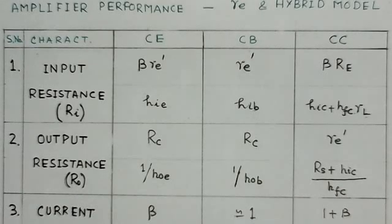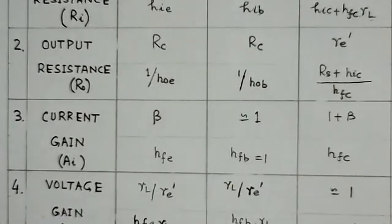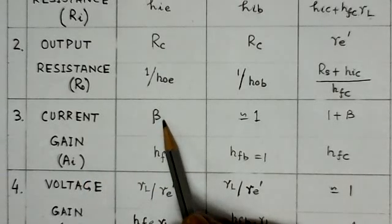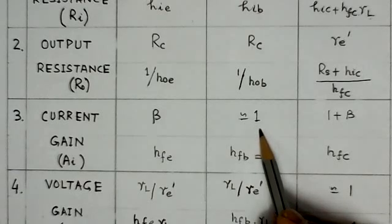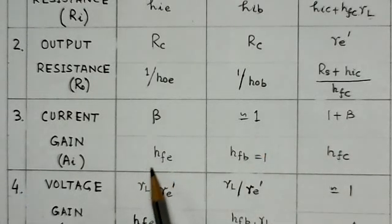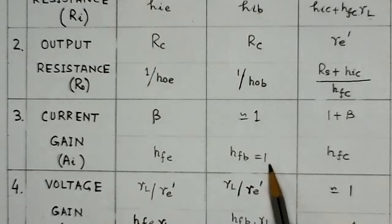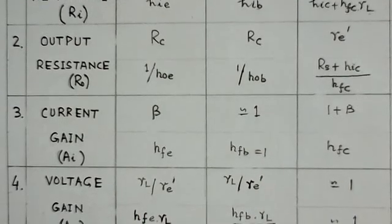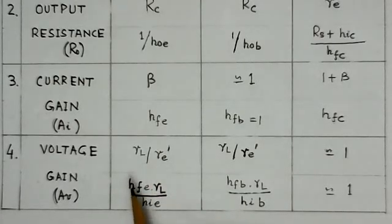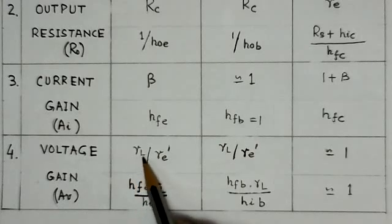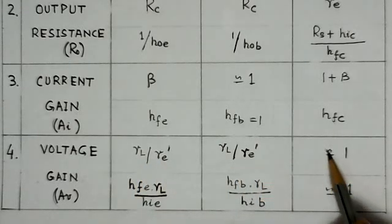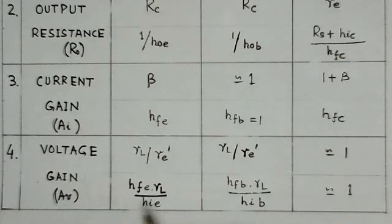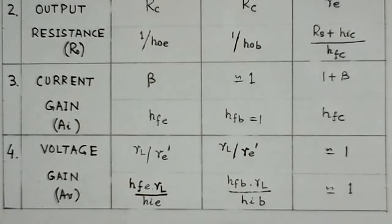Continuing the comparison table: for the hybrid model, output resistance is 1/HOE (common emitter), 1/HOB (common base), and (RS + HIC)/HFC (common collector). Current gain for the RE model is beta (common emitter), 1 (common base), and (1 + beta) (common collector). For the hybrid model: HFE (common emitter), HFB approximately 1 (common base), and HFC (common collector). Voltage gain is RL/RE-dash for all RE model configurations, approximately 1 for common collector, and HFE×RL/HIE (common emitter) and HFB×RL/HIB (common base) for the hybrid model.